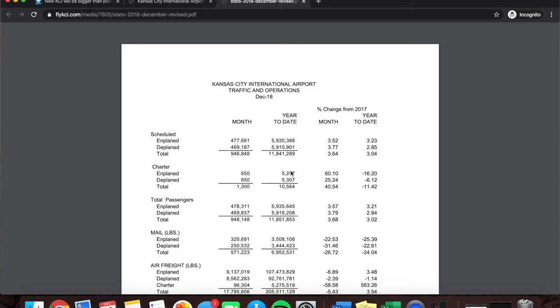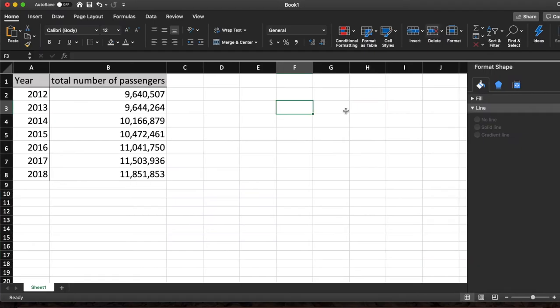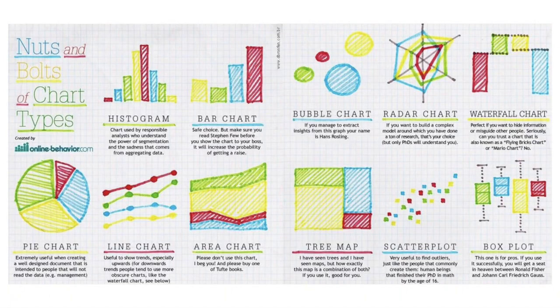This brings me to my third tip: use data visualization for easier interpretation. To do this, I will use an Excel sheet to input my data and then create a chart from it. I have already inputted my information from 2012 to 2018. There are many different types of charts to use. If you're not quite sure what kind of chart you should use, here's an infographic from onlinebehavior.com that lists the many types of charts and their uses. For my specific data, I wanted to see a trend or change over time, so I decided to use a line chart.